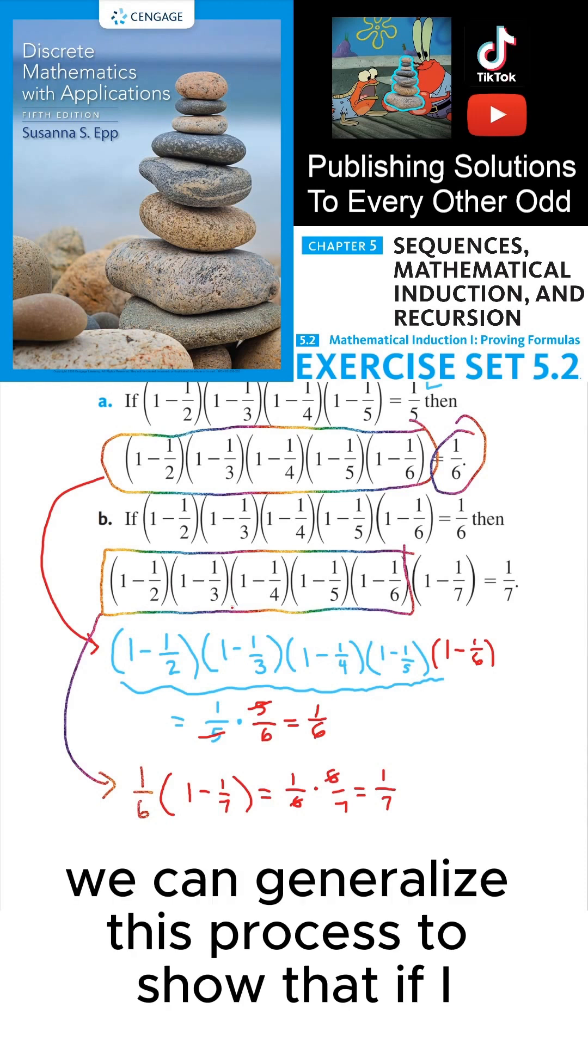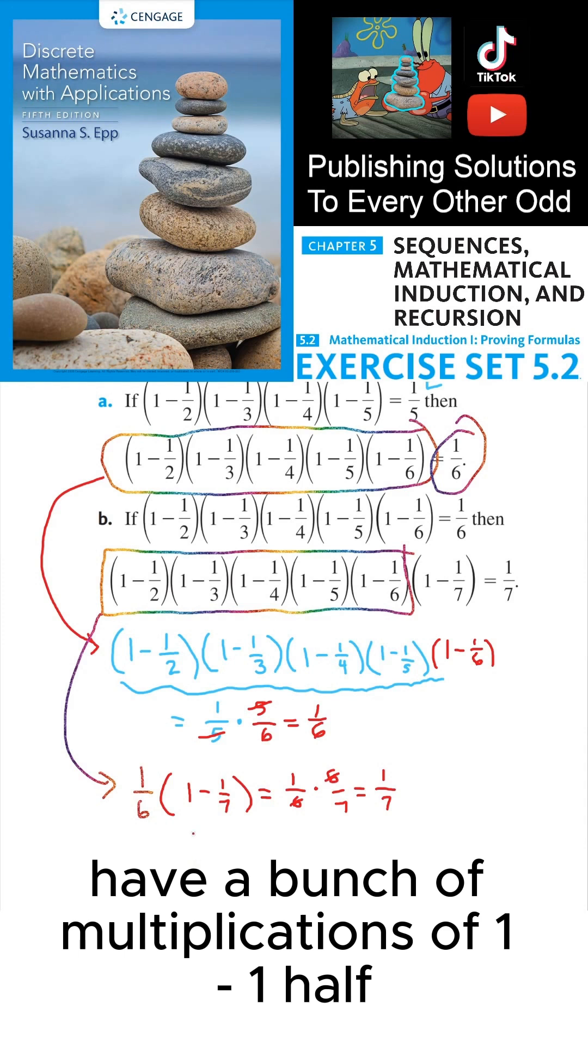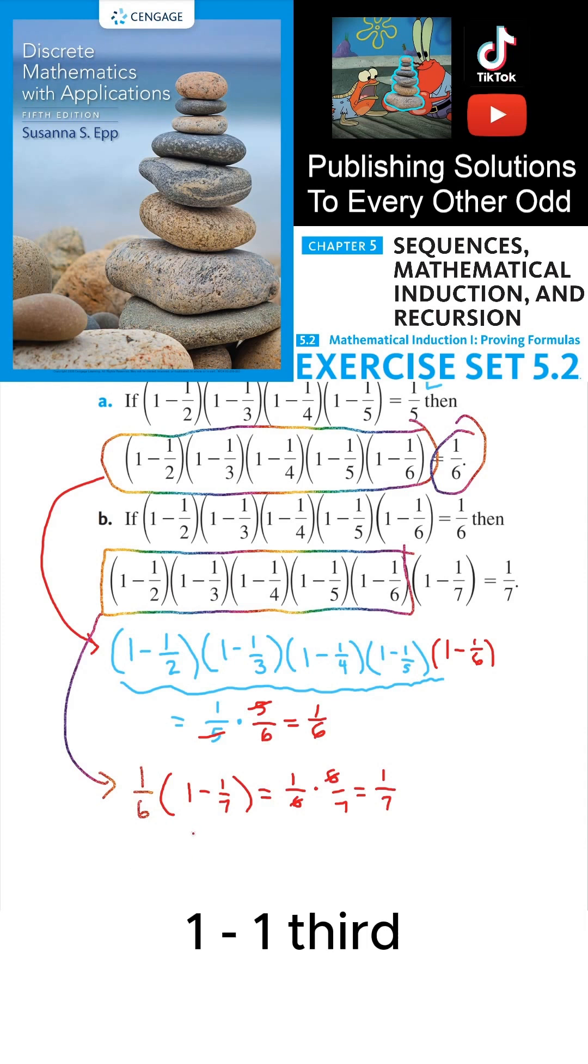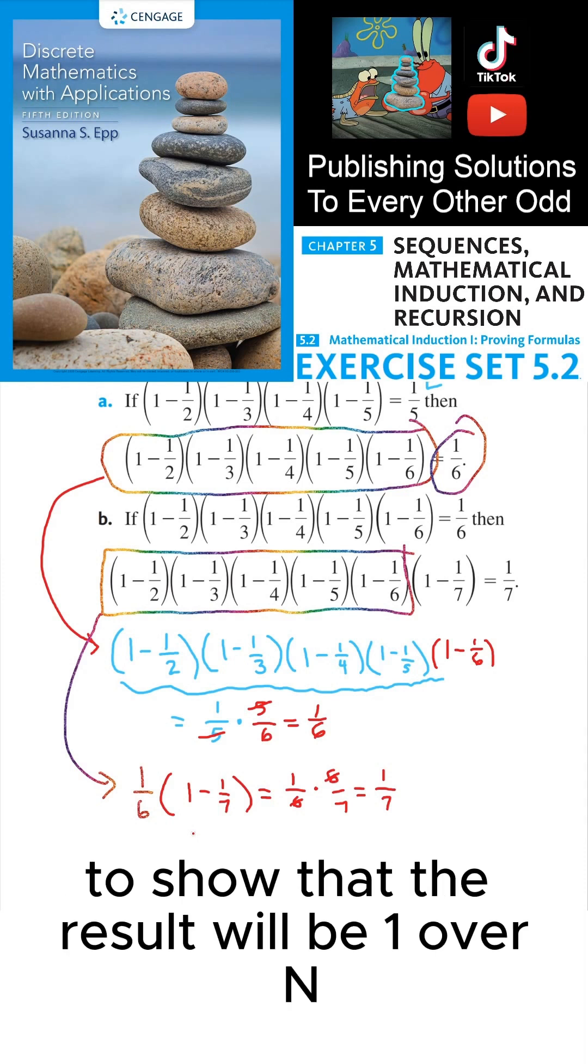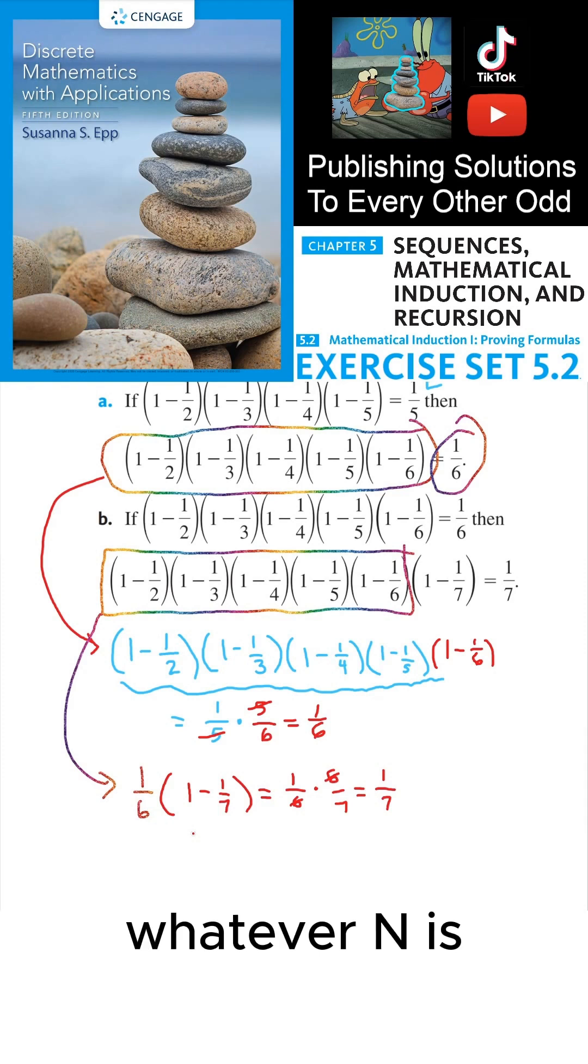Instead of proving the next fraction is 1/8, by taking the previous fraction and multiplying it by (1 minus 1/8), we can generalize this process to show that if I have a bunch of multiplications of (1 minus 1/2), (1 minus 1/3), (1 minus 1/4), all the way to (1 minus 1/n), we can generalize this process to show that the result will be 1/n, whatever n is.